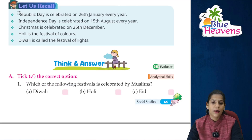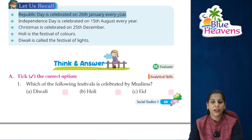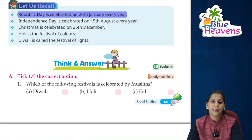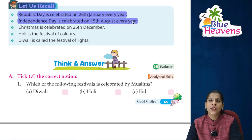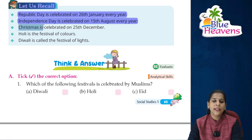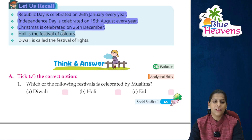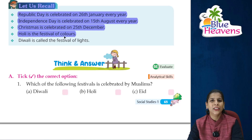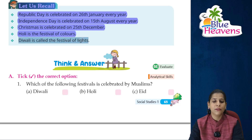Status Recall: Republic Day is celebrated on 26th January every year. Independence Day is celebrated on 15th August every year. Christmas is celebrated on 25th December. Holi is the festival of colors. Diwali is called the festival of lights.